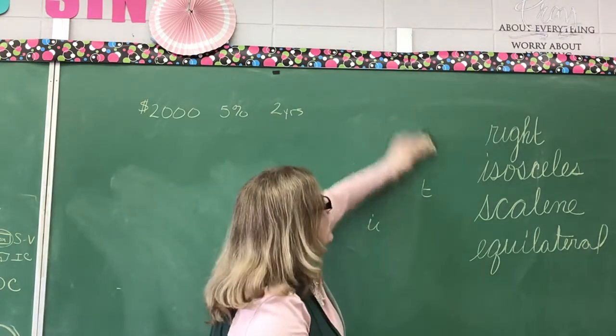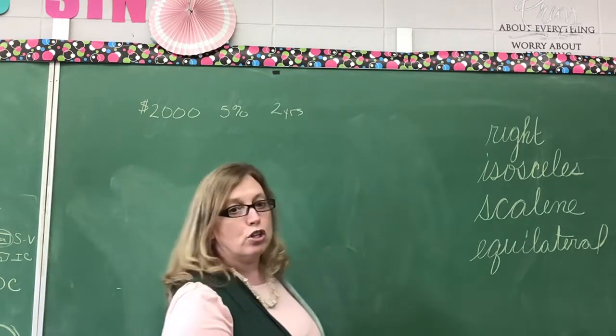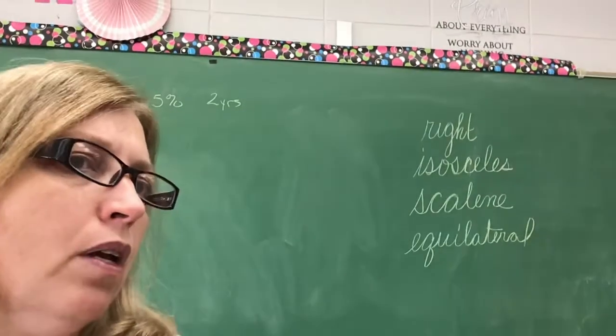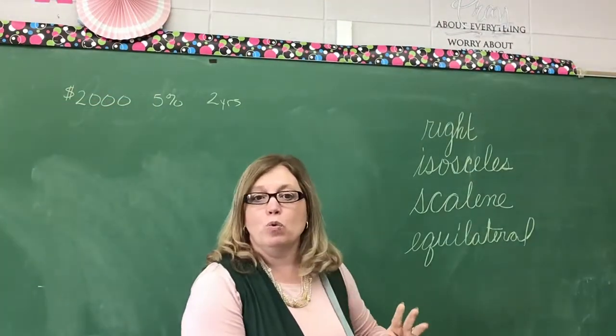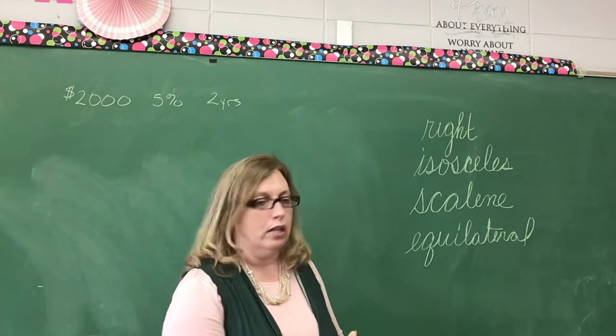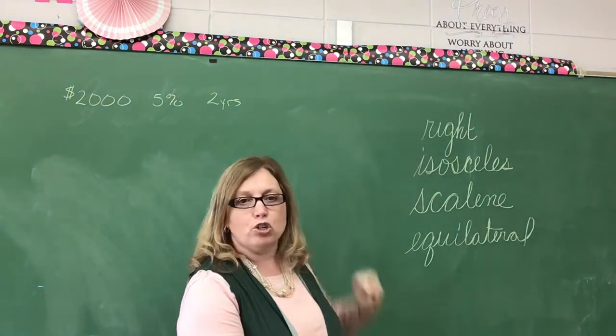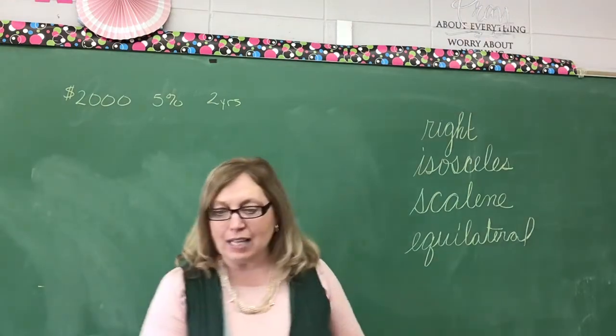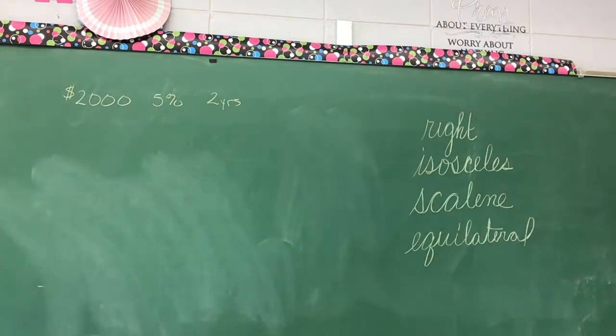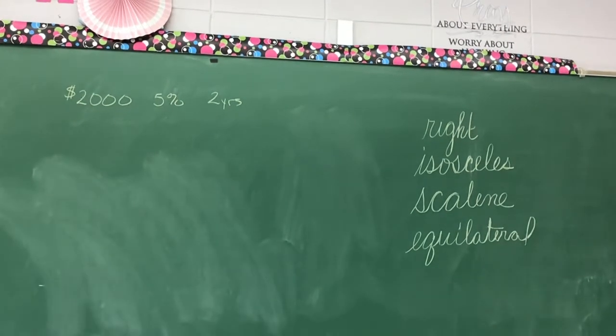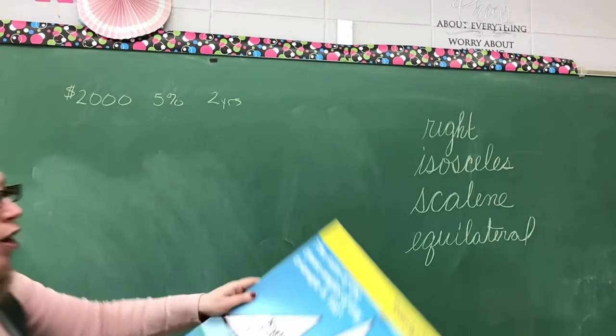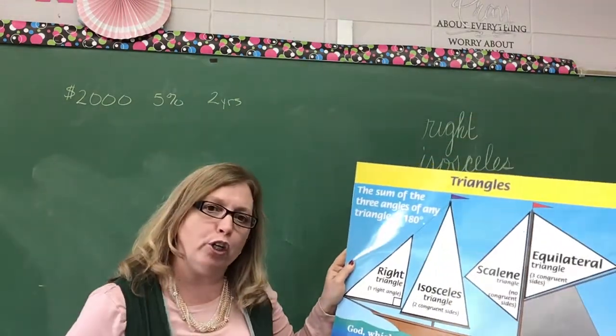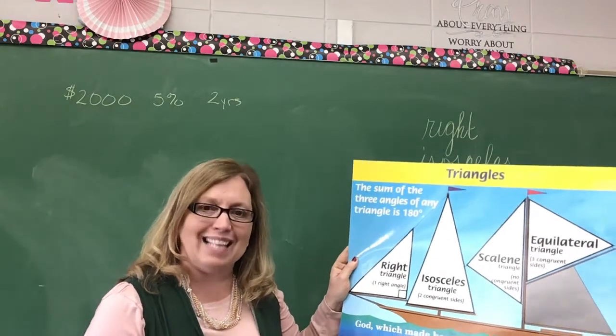You will also need to know the four types of triangles. Let me turn this just slightly so you can see it better. There are four kinds of triangles. You will need to know them by definition. A right triangle is a triangle that has one right angle. The second is an isosceles triangle. I'm going to show you a picture. An isosceles triangle, as you can see here in our picture, it has two sides that are congruent. What does the word congruent mean? It means they're exactly the same.